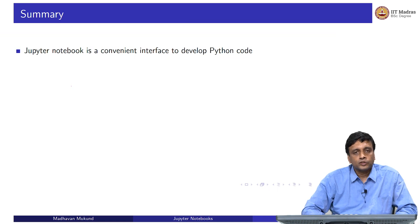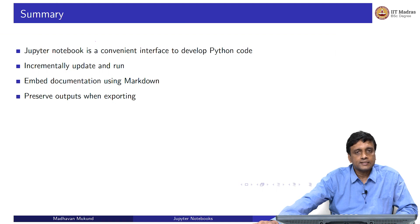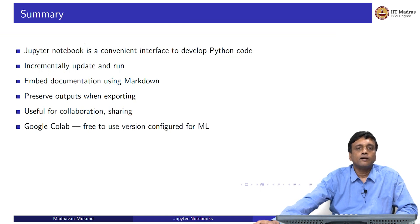To summarize, we will use Jupyter Notebooks because it is a convenient interface to develop Python code. In particular, this ability to edit, save and share the code is useful for me as an instructor also to be able to distribute the code that we discussed in this class to you after the class. You can incrementally update and run your code, you can write documentation in between your code using this markdown syntax. And most importantly, as I said, you can preserve the state of the notebook in terms of what you have run, what outputs you have generated and export it. And this is extremely useful for collaboration and for sharing, whether you are sharing it with a colleague, or you are sharing it for teaching purposes like we are doing here. And the particular version of the Jupyter Notebook that we are going to be using, is Google's CoLab, which is free to use, and it is configured for machine learning.